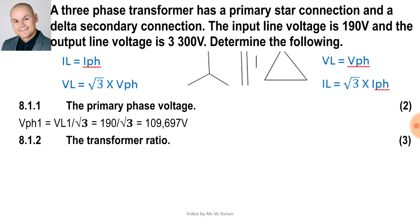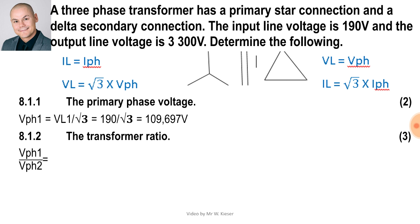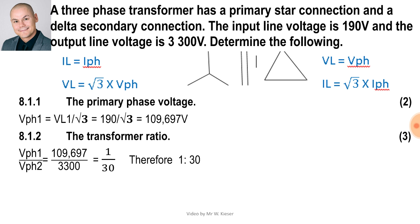To calculate the transformer ratio, when using the equation we use phase values, so it's V phase one over V phase two. V phase one is 109.697 volts. On the secondary side it's delta connected, so the line voltage and phase voltage are the same: 3300 volts. 109.697 is the smaller value — it goes into itself once and into 3300 thirty times. Therefore the ratio is 1 on the primary and 30 on the secondary.